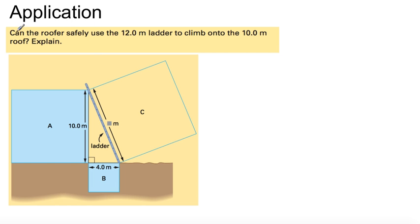Let's go to an example. The roofer. Can the roofer safely use a 12-meter ladder to climb onto the 10-meter roof? So 10-meter roof, 10 meters above the ground. A ladder, it looks like it's 4 meters away from the wall. And this ladder, well, hopefully it makes it all the way up. But can he use a 12-meter ladder to climb onto the 10-meter roof? So we're going to use the Pythagorean theorem. a squared plus b squared equals c squared.